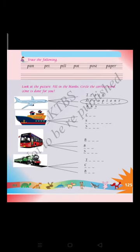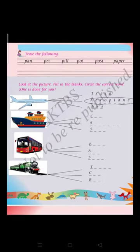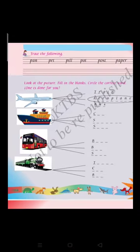Next, come down. There is a bus picture. You have to fill in the blanks with the correct word. The options are B-O-A-T - boat, B-U-S - bus, S-H-I-P - ship. Bus is the correct answer. You have to circle B-U-S, bus.